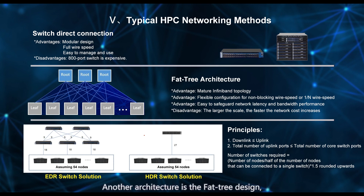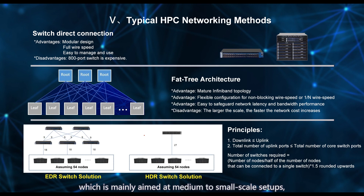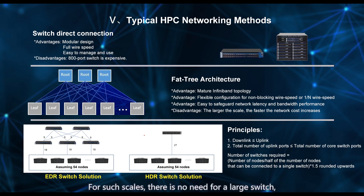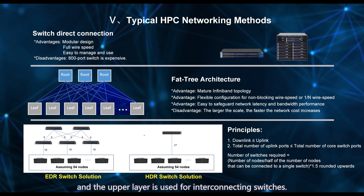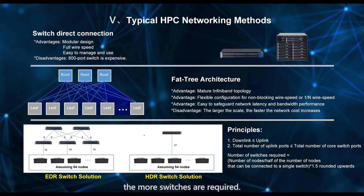Another architecture is the fat tree design, which is mainly aimed at medium to small-scale setups, such as dozens or hundreds of servers. For such scales, there is no need for a large switch, so a fat tree architecture can be adopted. This design is divided into two layers: the lower layer connects to the servers, and the upper layer is used for interconnecting switches. The disadvantage of this design is that the larger the scale, the more switches are required.